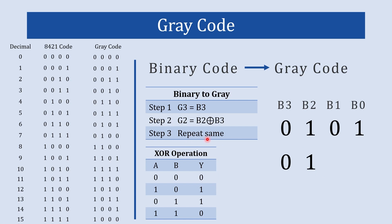In step three, we repeat the same process. We do b1 XOR b2 — both are different — so the output is 1. Then b0 XOR b1 — both are different — so the output is 1. The final answer is 0111. Let's verify: 0101 in binary is decimal 5, and the gray code equivalent of 5 is 0111. Correct!